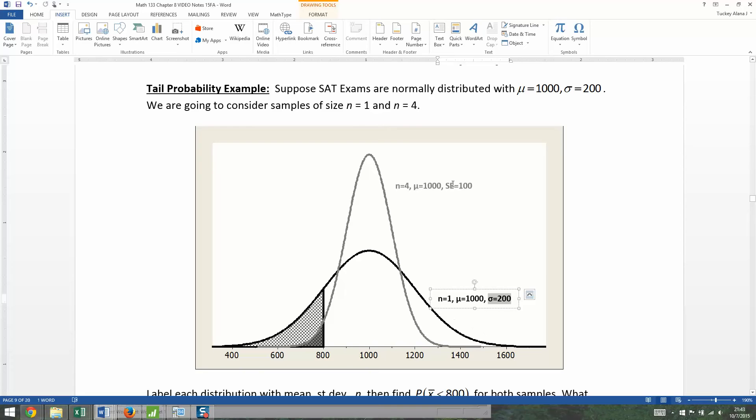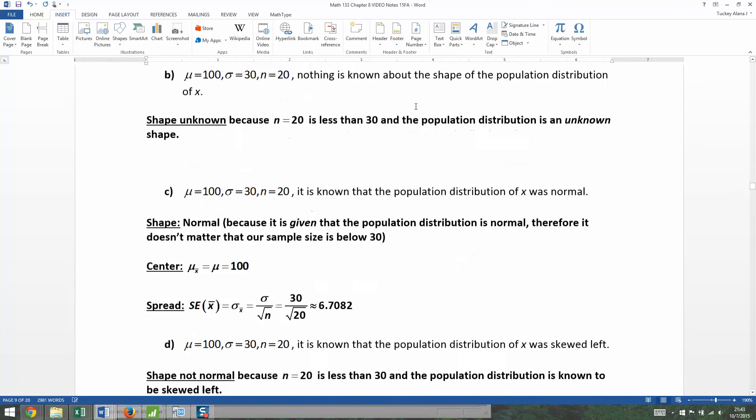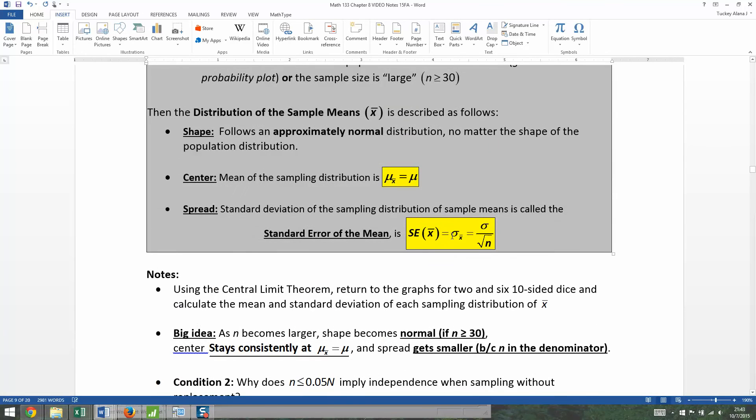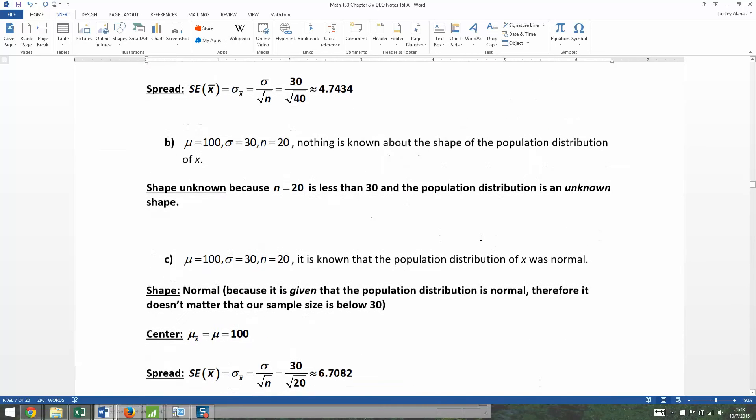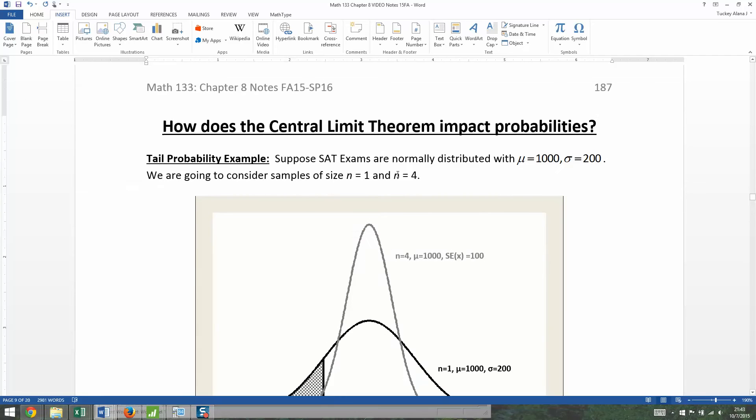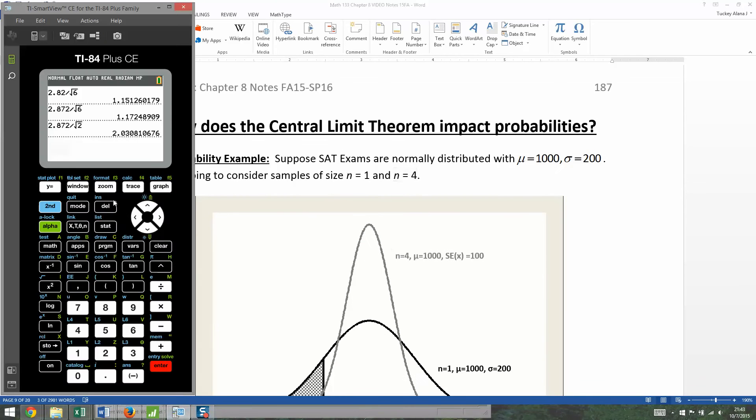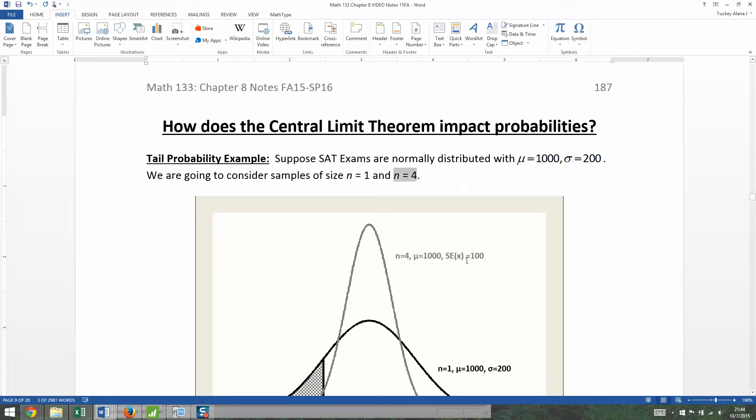Now, to find the standard error of X bar, all you have to do is follow the formula from the central limit theorem. You need to take sigma and divide it by the square root of n, but sigma we know is 200. So we're going to divide 200 by the square root of n, and n was 4 for this one. I'm going to grab my calculator and take 200, divide it by the square root of 4. The square root of 4 is 2, and 200 divided by 2 makes 100, and that's where the 100 comes from.